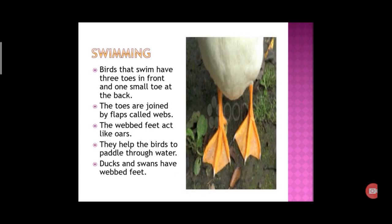Swimming. These birds have three toes in front and one small toe at the back. The toes are joined by flaps called webs that work as oars to paddle through water. For example, ducks and swans. In this picture, you are able to see the three toes in the front, one toe in the back, and the webs that help them to swim in water.